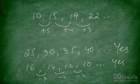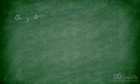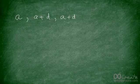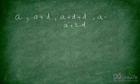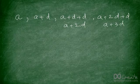Commonly in mathematics we write arithmetic progressions as follows: the first term is called a and the common difference is d. So the first term is a, the second term is a + d, the third term is a + 2d, the fourth term is a + 3d, and so on.